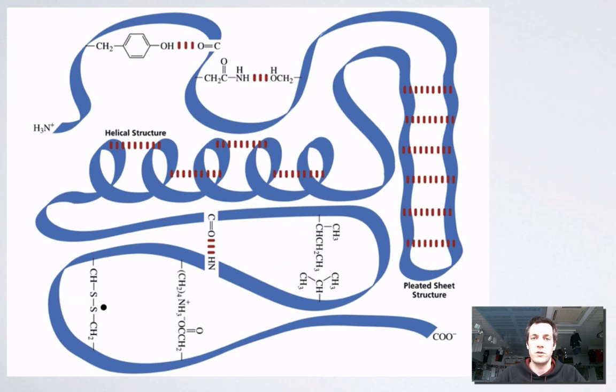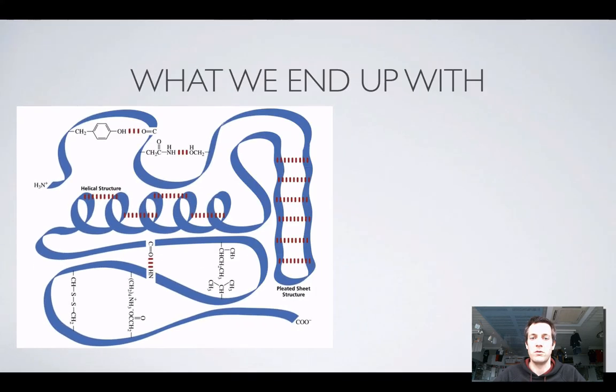Here we've got a disulfide bridge. You might remember that when the chain twists up like this because of the hydrogen bonds in its secondary structure, we call that a helix. When it folds up into these sheets, it's called a pleated sheet. Remember the difference here between the secondary and the tertiary structure of the protein.